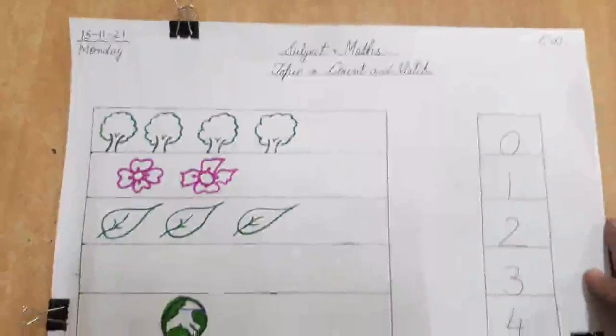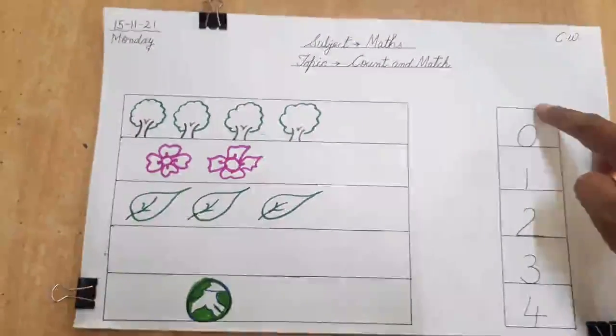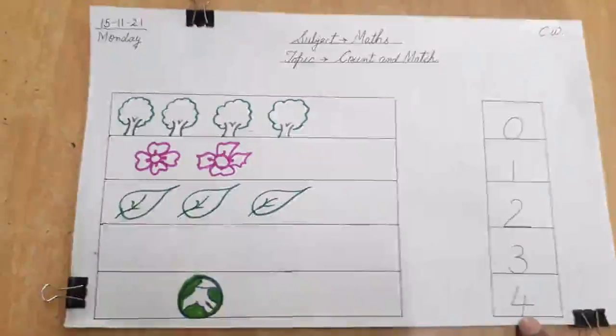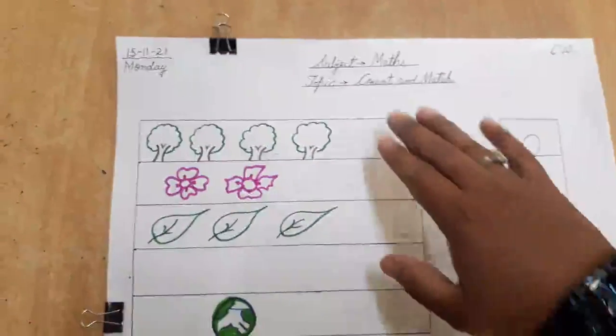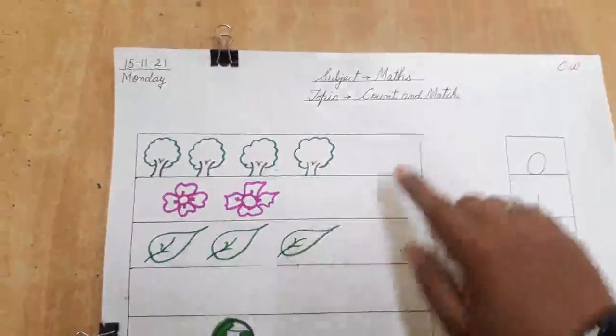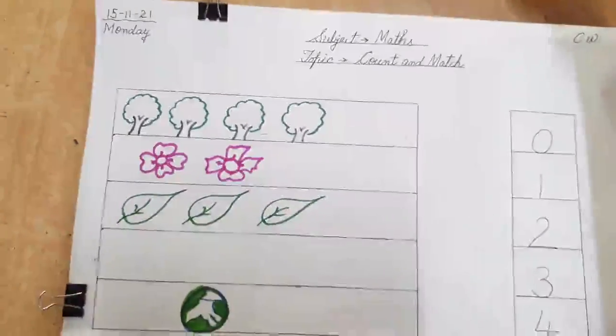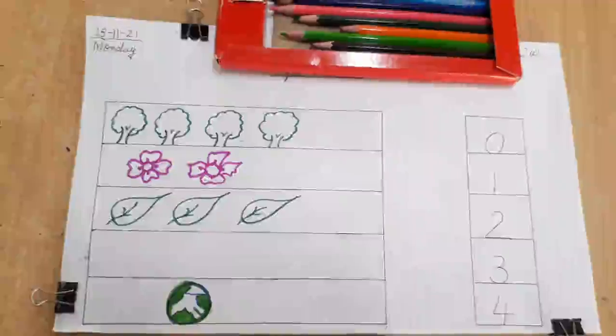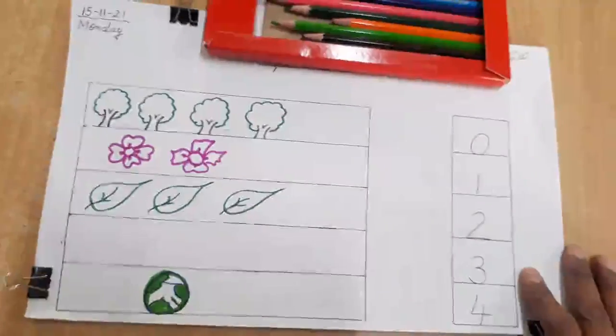Now, class, just see how you are going to do the work in notebook. You can write down your numbers in order. Which will be again a practice for you. Of writing your numbers in sequence. Like this. And draw some pictures here. You will color them also. And after that, you will count the pictures and match with these numbers using your color pencils. Am I clear? So, class, now let's begin with the work of count and match.